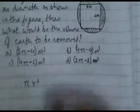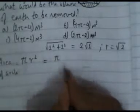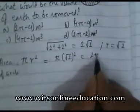The area of a circle is π r². To find r: the diagonal of the square is √(2² + 2²) = √8 = 2√2. So the diameter is 2√2 and the radius is √2. Therefore, area of circle = π × (√2)² = 2π.